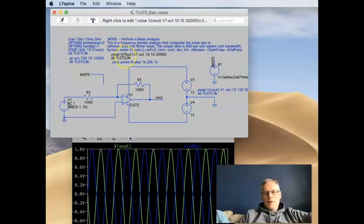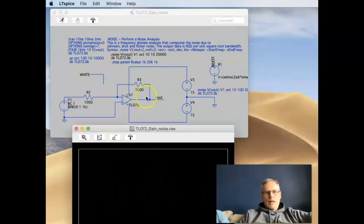I'm looking at the Vout here. So we've got a capital V, open bracket Vout, with respect to V1, which is here. And we've got our frequency ranges, our number of points in the octave. So if we run that analysis.